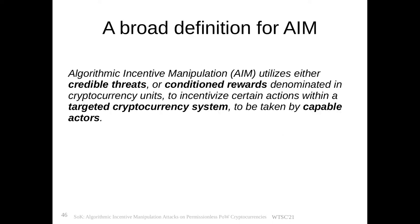A broad definition: Algorithmic incentive manipulation utilizes either credible threats or conditioned rewards denominated in cryptocurrency units to incentivize certain actions within the targeted cryptocurrency system to be taken by capable actors. The manipulation of incentives can come in the form of threats or rewards. The cryptocurrency system can be targeted from within or via another funding cryptocurrency. In proof-of-work cryptocurrencies, a capable actor is a miner — who need not be within the cryptocurrency as long as they can provide proof-of-work for the required algorithm. In proof-of-stake, a capable actor might be an entity holding voting stake.